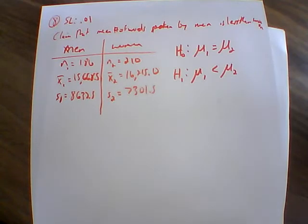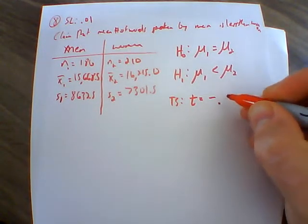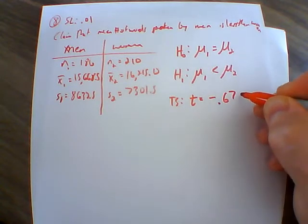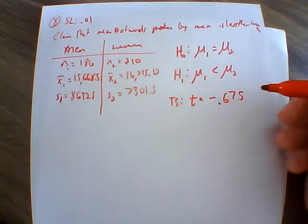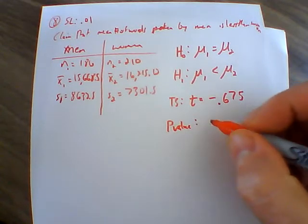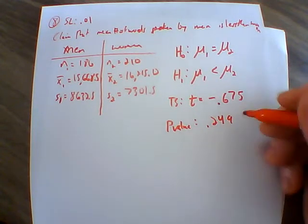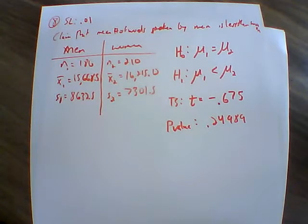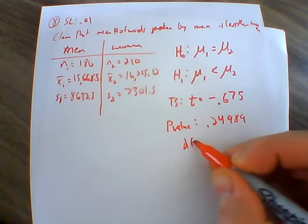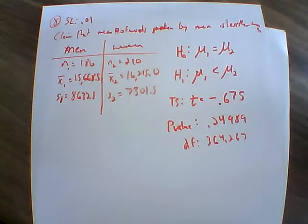Within the results, we see that our test statistic T equals negative 0.675. The calculator also computed our degrees of freedom and our p-value. Our p-value is 0.24989. We can also note our degrees of freedom, which is 364.267, though that's not the most critical piece of information here.